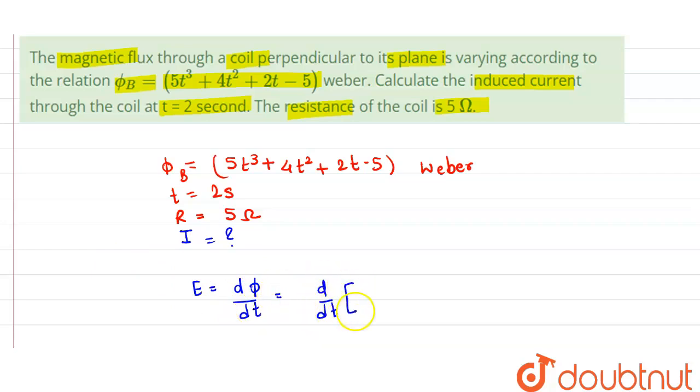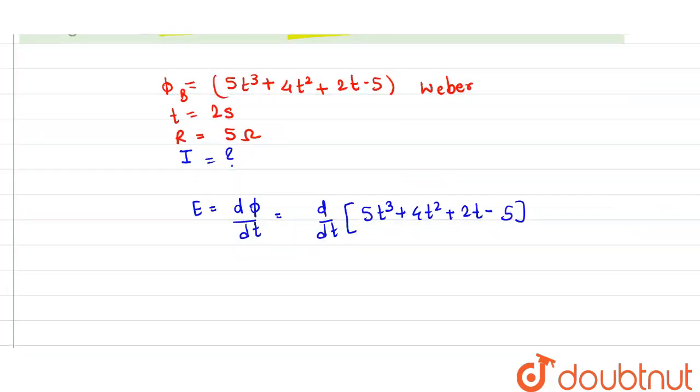So this will be equal to d/dt into (5t³ + 4t² + 2t - 5). So we have E equal to 15t² plus 8t plus 2.